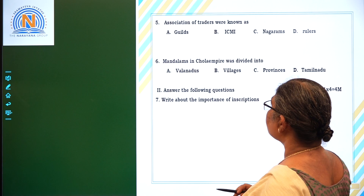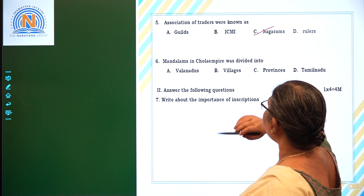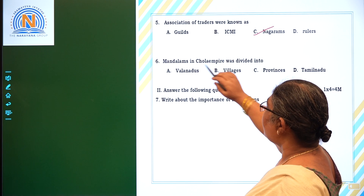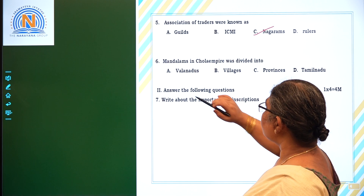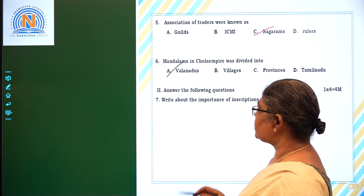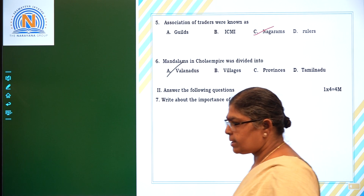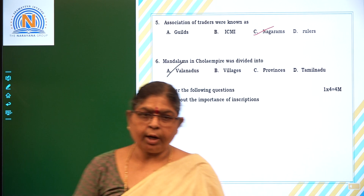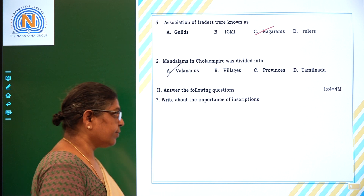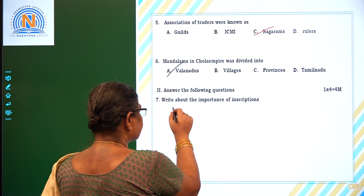The association of traders are known as Nagarams. Mandalams in the Chola Empire were divided into Valaadus. Now, write about the importance of the inscriptions — what is the importance of inscriptions?